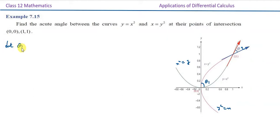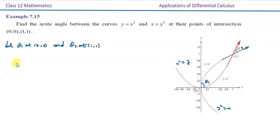Let theta 1 be at (0,0) and theta 2 be at point (1,1). For the first curve, dy by dx is equal to 2x. Therefore, m1 is equal to 2x.